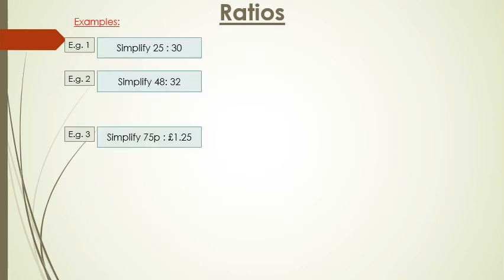Here are some examples. So simplify 25 to 30. Well we know that 25 and 30 are in the 5 times table. So you do 25 divided by 5 which is 5 and 30 divided by 5 which is 6. So simplifying 25 over 30 is 5 to 6.